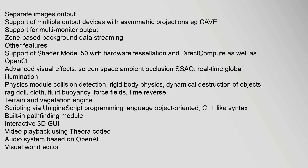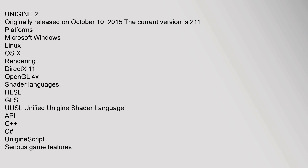Scripting is available via UnigineScript programming language, which is object-oriented with a C-like syntax. Other features include a built-in pathfinding module, interactive 3D GUI, video playback using Theora Codec, an audio system, and a Visual World Editor. Unigine 2 was originally released on October 10, 2015.